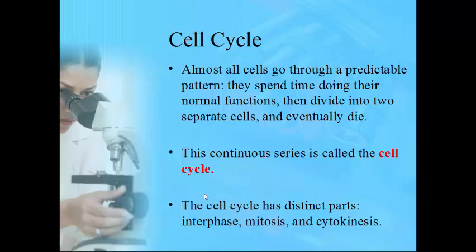Next we'll talk about the cell cycle — what a cell typically goes through and its various stages. Almost all cells have a predictable pattern: doing their normal functions, dividing to form identical cells, and eventually dying. Some cells divide more rapidly depending on the tissue; some divide very slowly. This continuous series is called the cell cycle, and it has distinct parts: interphase, mitosis, and cytokinesis.